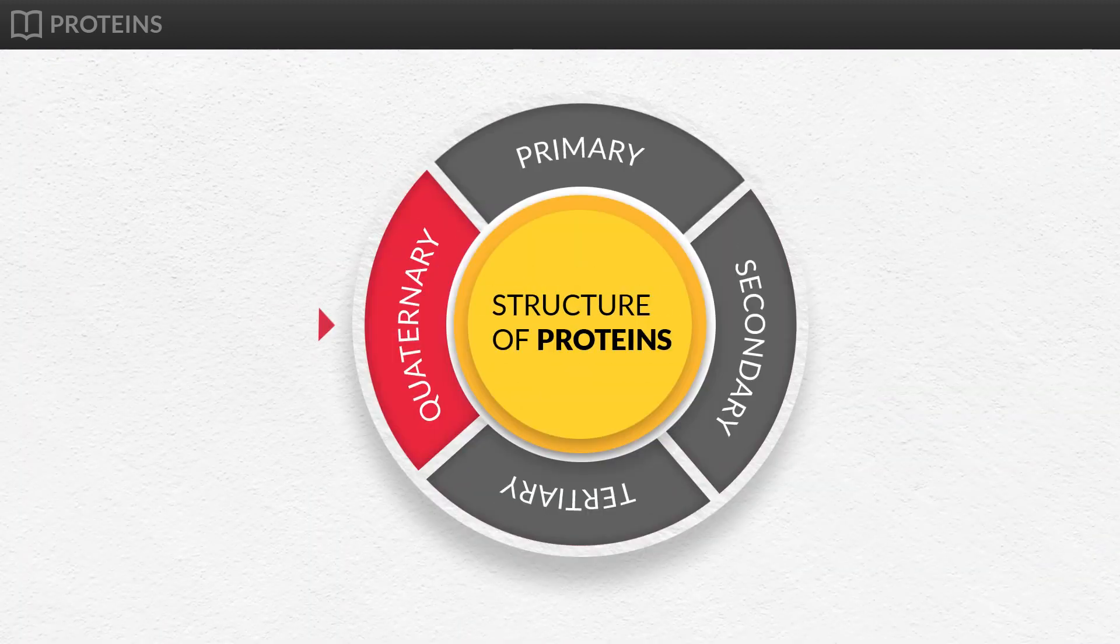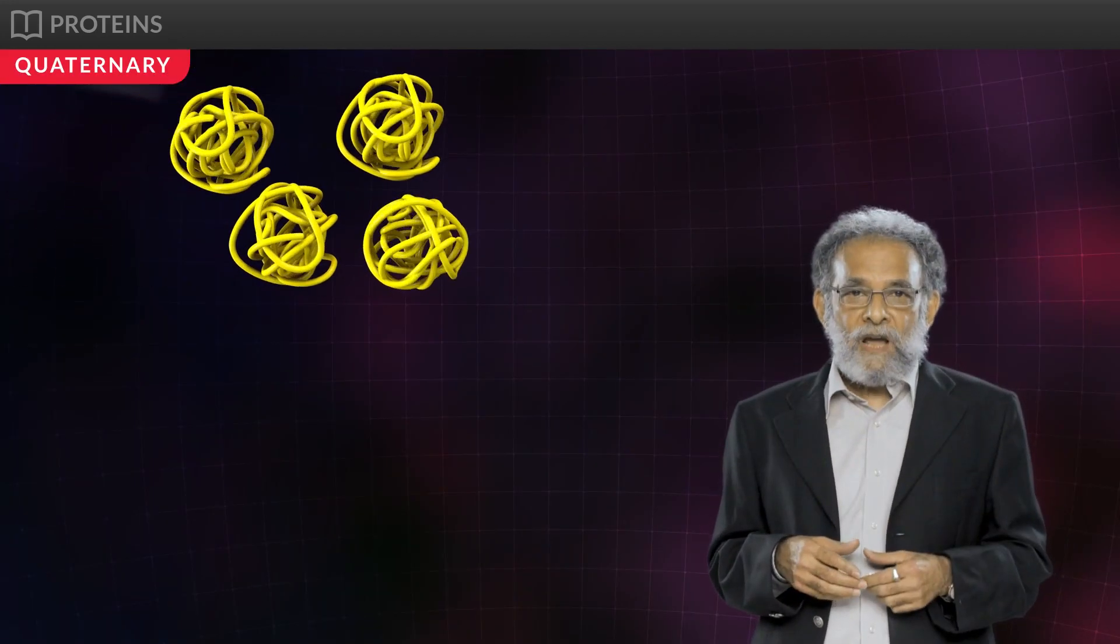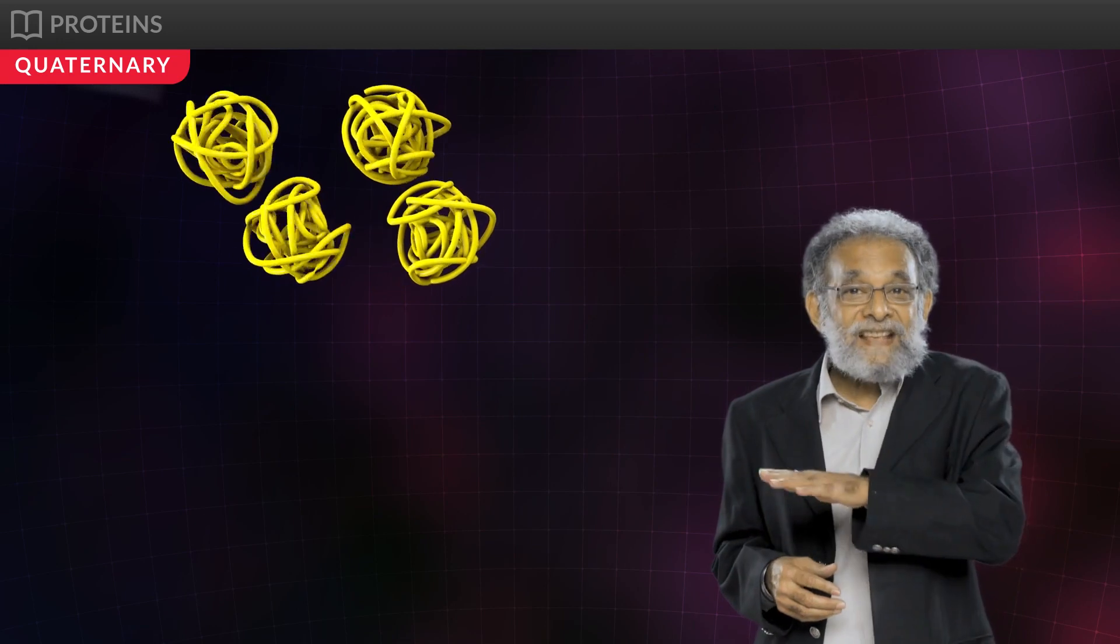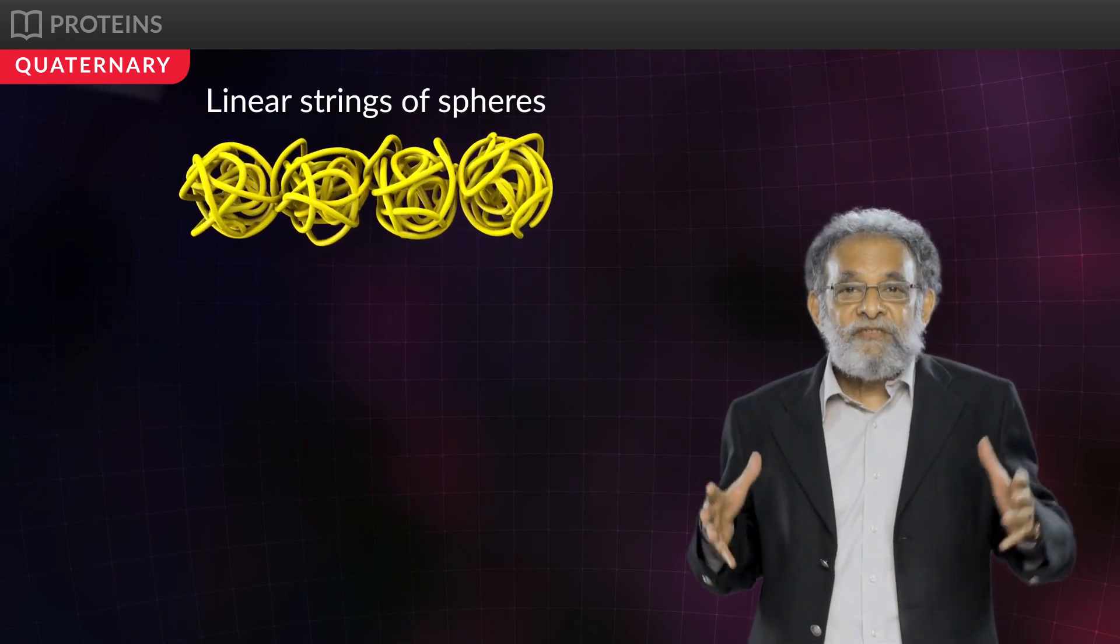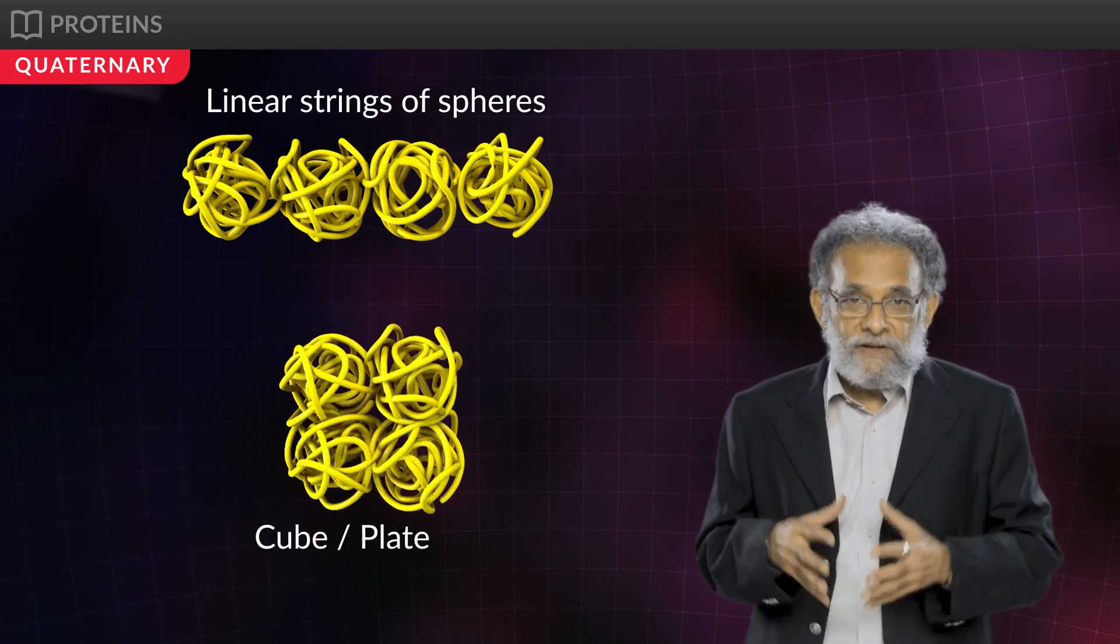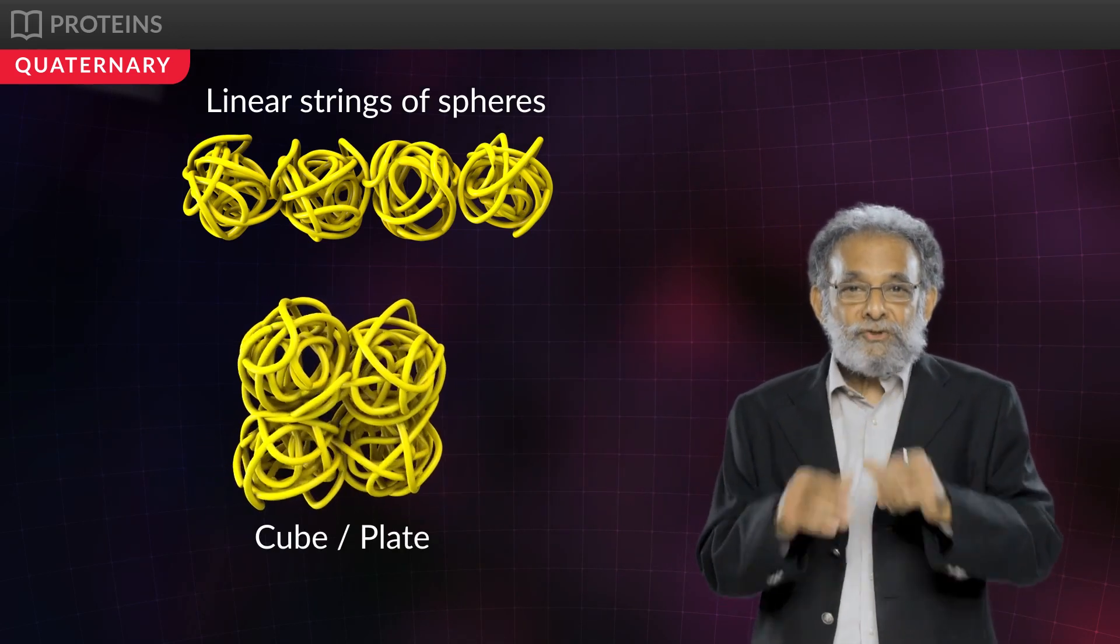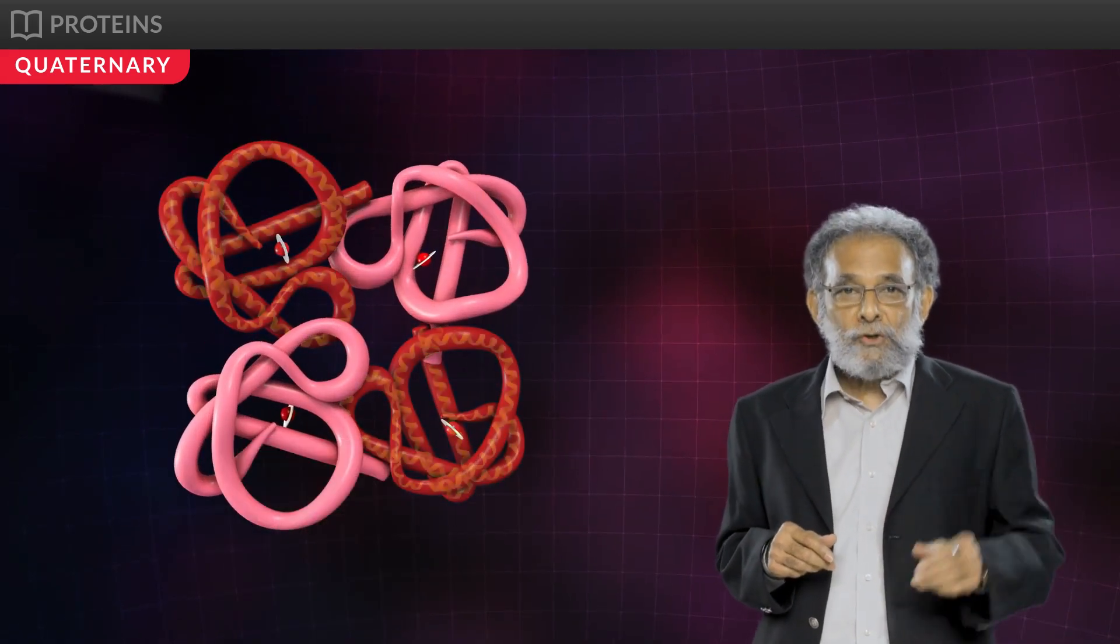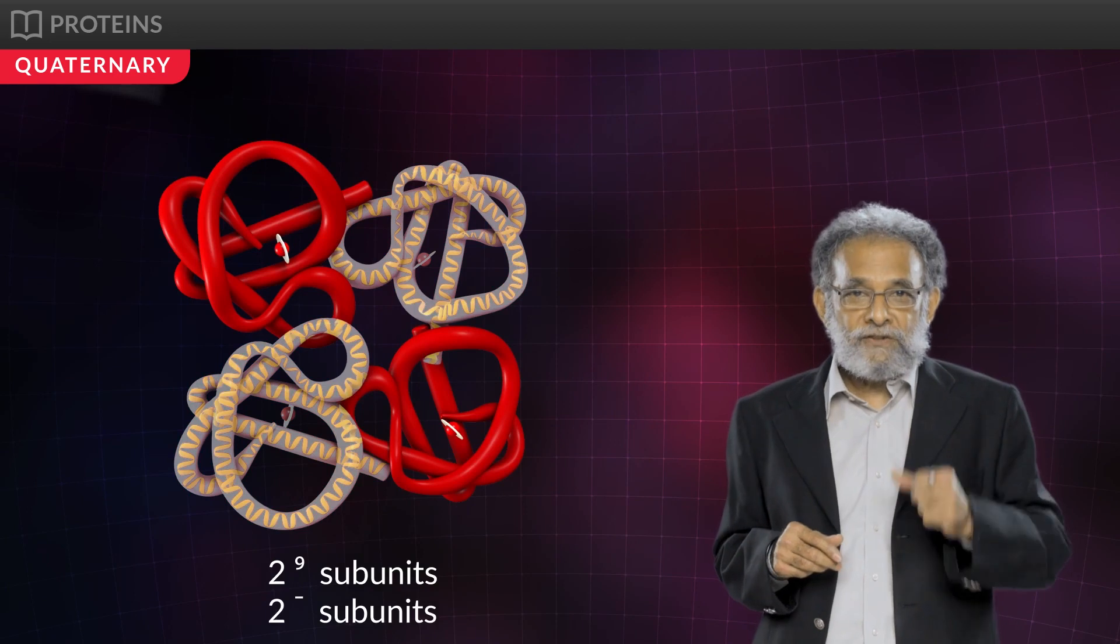In quaternary structure, several polypeptides, also known as subunits, are arranged as linear strings of spheres, or one upon each other in the form of a cube or plate. Such structure is seen in hemoglobin. It has two alpha subunits and two beta subunits.